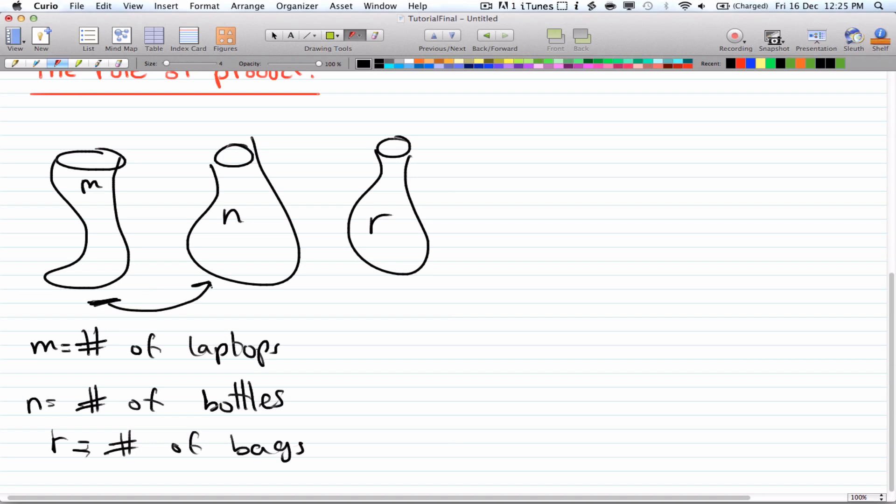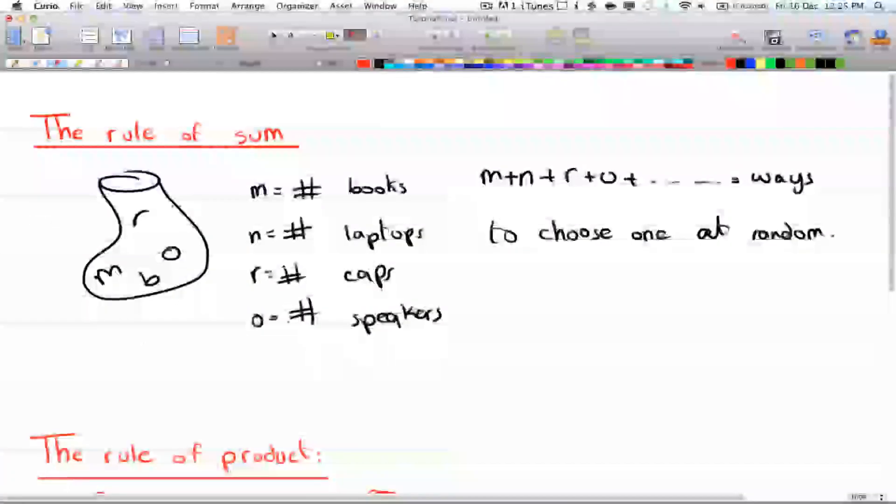So in this case you have to pick m first, and then you can choose n, and then you can choose r. So you're gonna have m times n times r times however many other bags there are, and this gives you the number of ways to choose one of each. Remember that the rule of product has to be cut into steps. So in this case we choose m first, then n, then r. So this is step one, step two, and step three. However, in the rule of sum it was just all in one step.